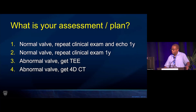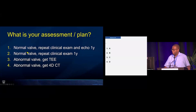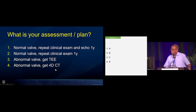So what is your assessment and plan for this patient? Number one: this is a normal valve, repeat clinical exam and echo in one year. Number two: this is a normal valve, repeat clinical exam in one year. Number three: abnormal valve, get a TEE — transesophageal echo. Or number four: you think this is an abnormal valve, get a 4D CT scan, cardiac CT.